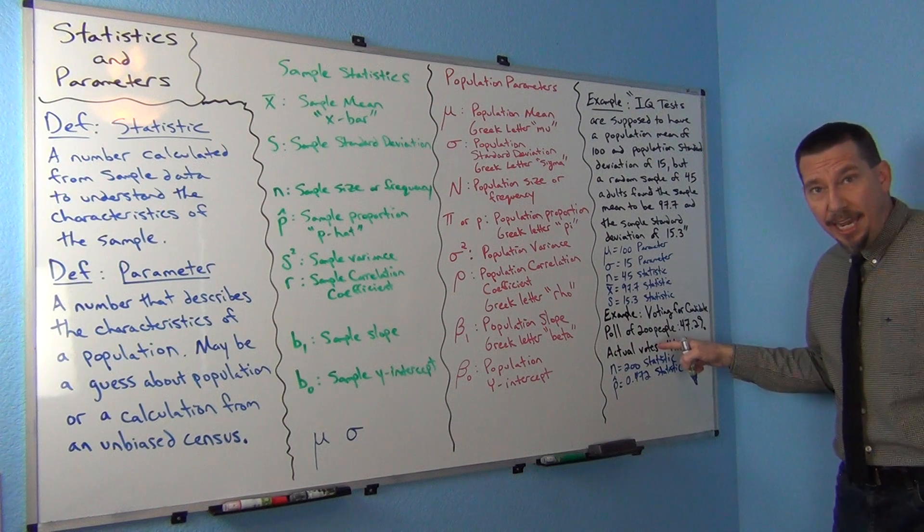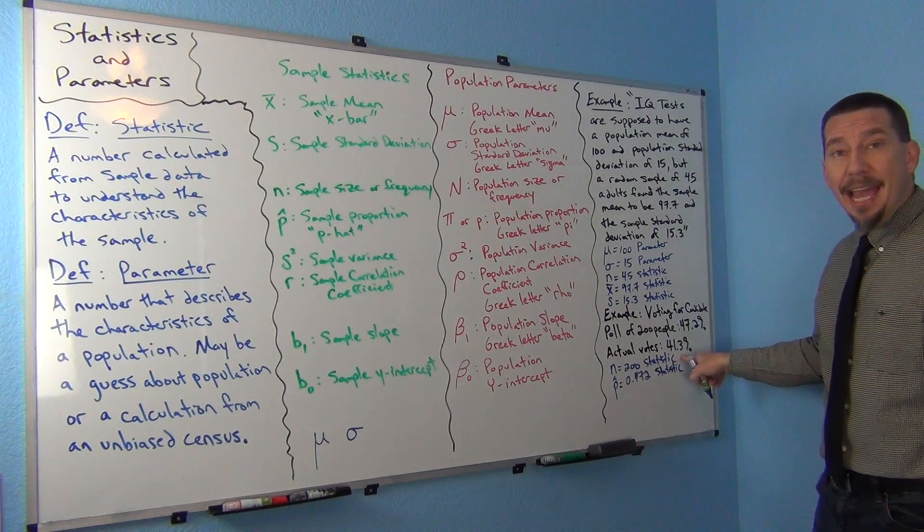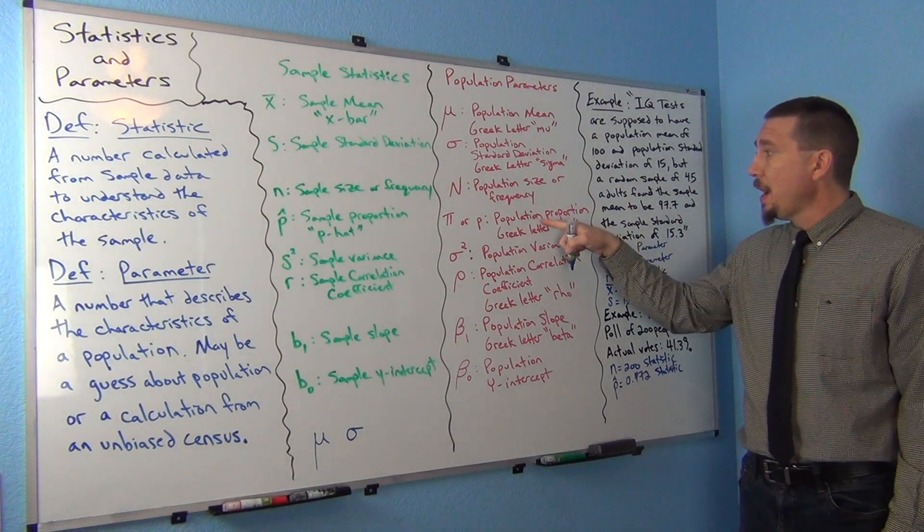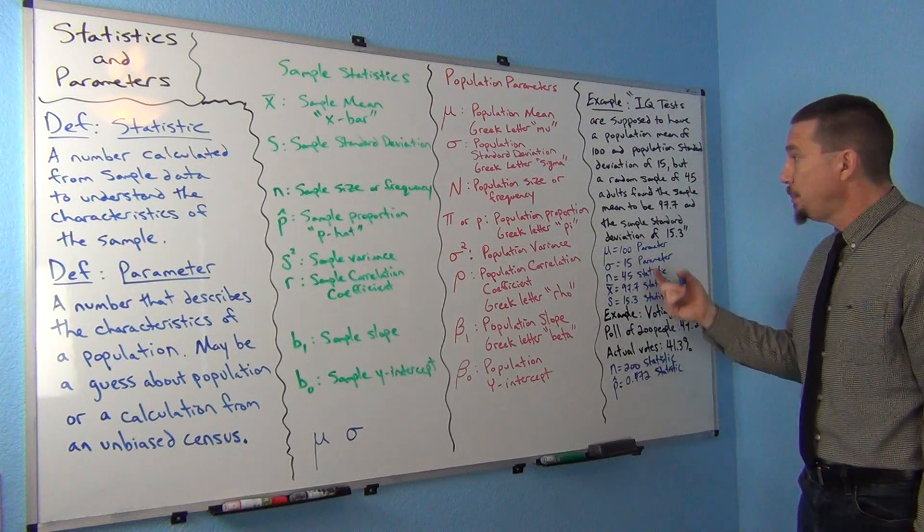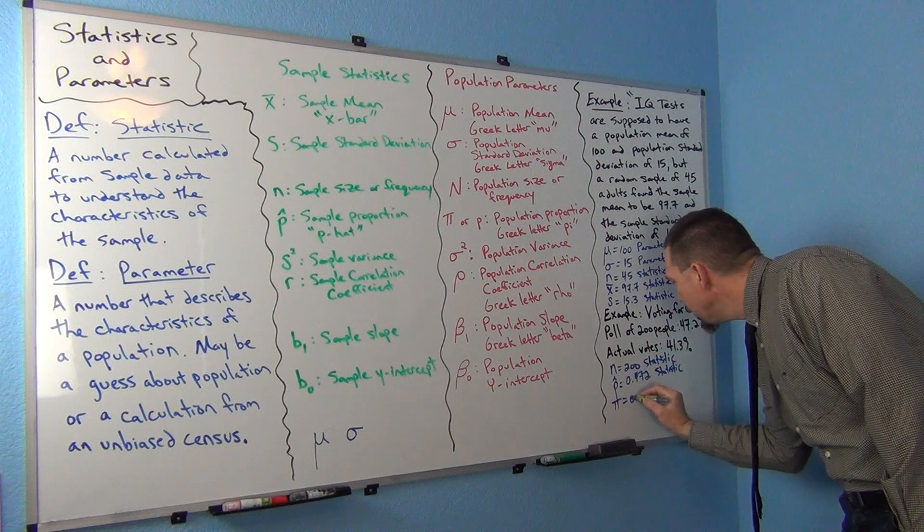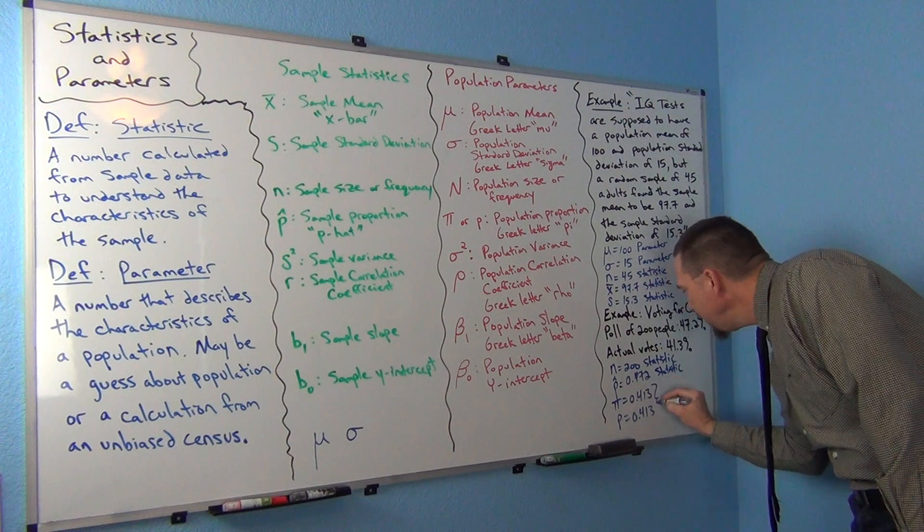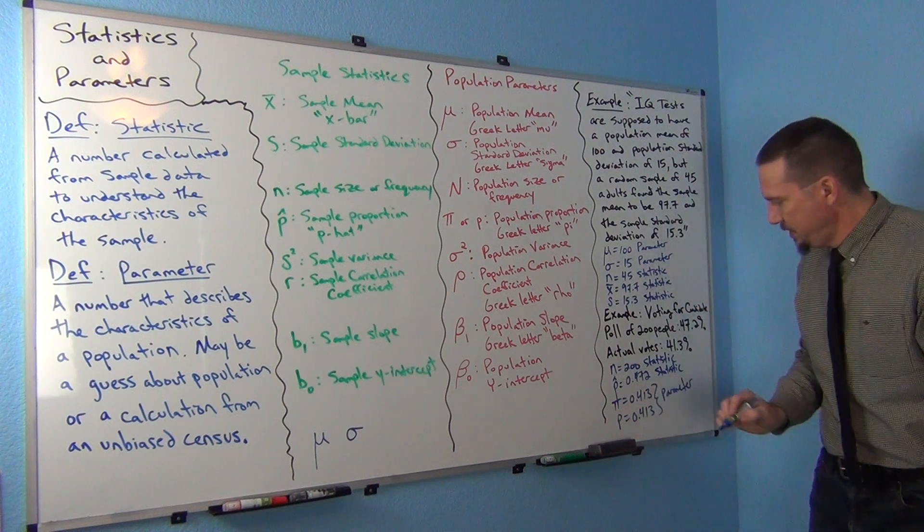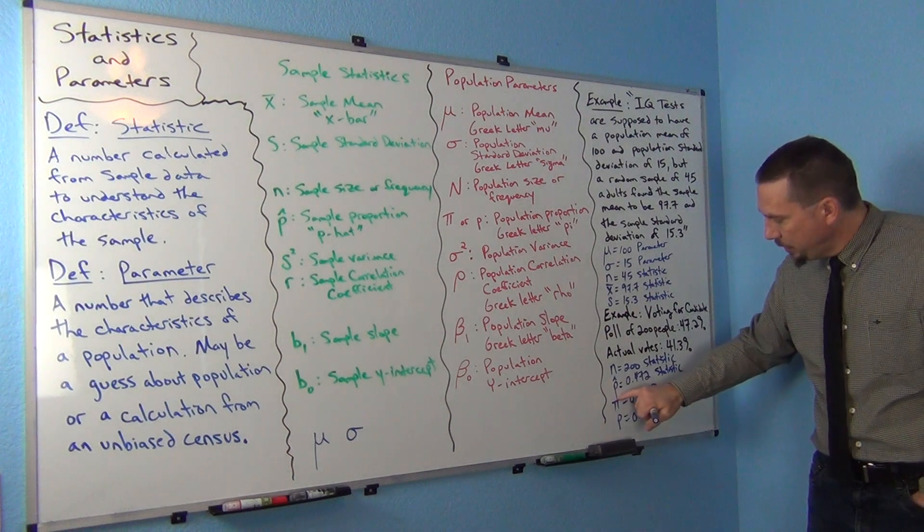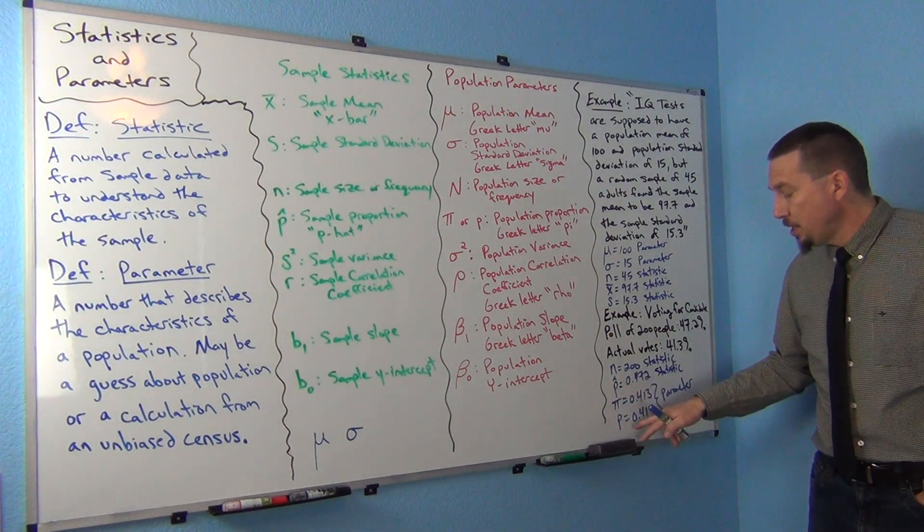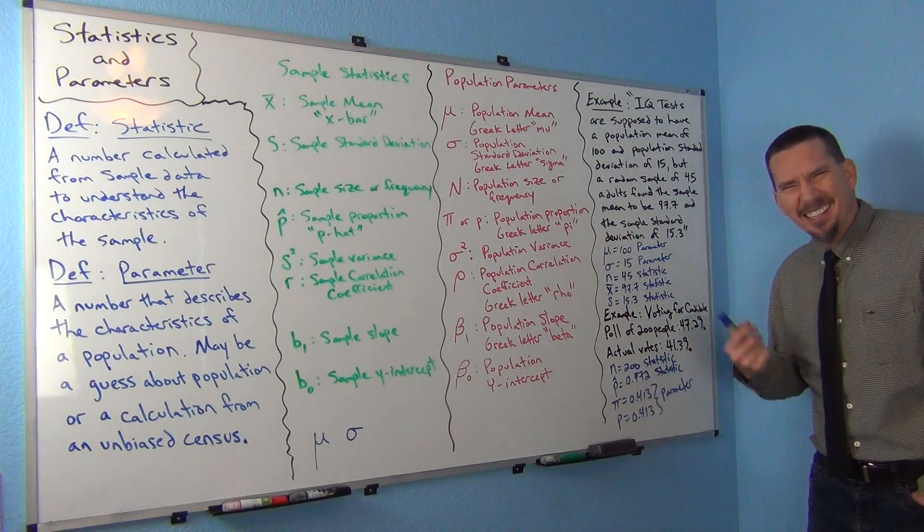Now on the actual voting day, when millions of people voted, there was 41.3 percent voted for the candidate. That's the actual population percentage. So that's our population proportion for voters. You could actually use one of two letters. You could write it as pi equals 0.413, or you could write it as P equals 0.413. Either way, those would be a parameter estimate. That was the actual population percentage or population proportion. I tend to use pi, the Greek letter pi. But it depends on your stat teacher. Some stat teachers prefer P. I would say more stat teachers use P than pi. I'm kind of old school that way.